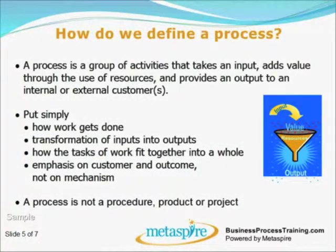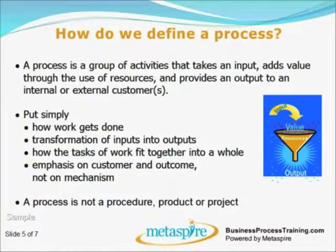So how do we define a process? A process is a group of activities that takes an input, adds value through the use of resources, and provides an output to an internal or external customer or customers. To put it simply, it's how work gets done, it's the transformation of inputs into outputs, it's how the tasks of work fit together as a whole, and it emphasizes on customer and outcome, not on the mechanism.